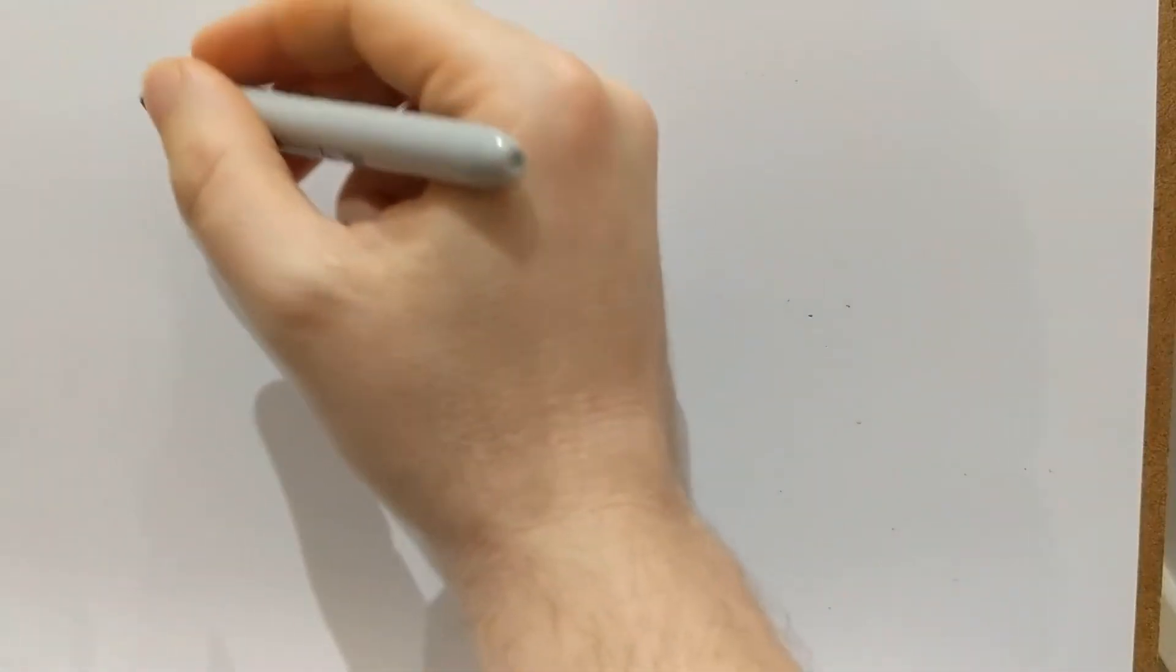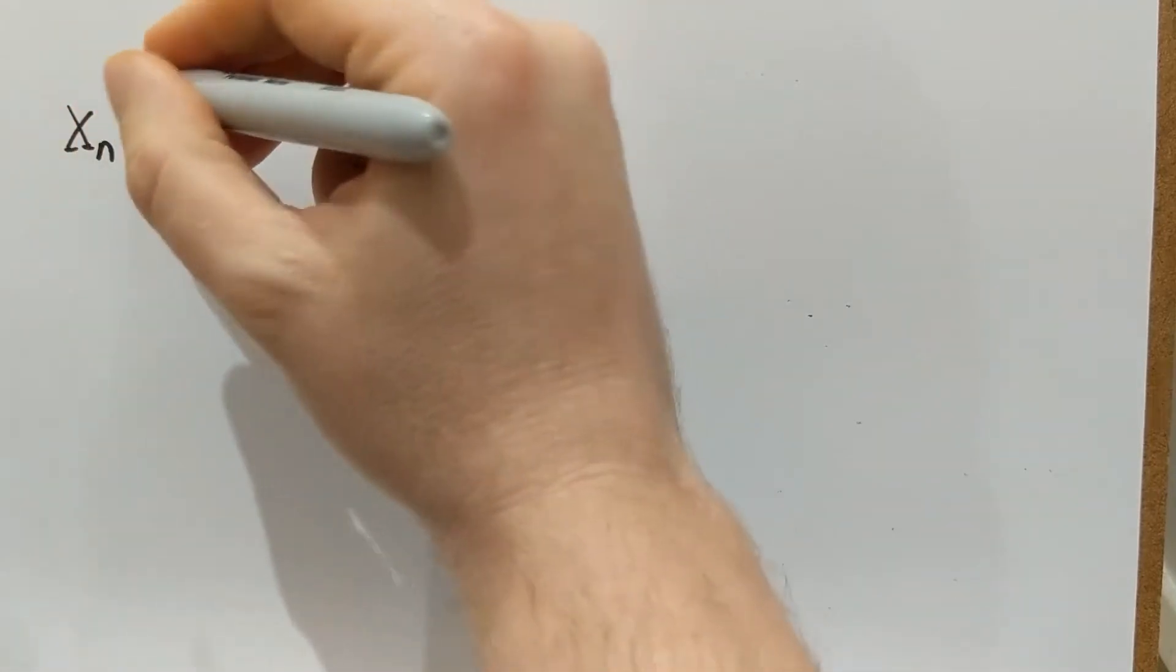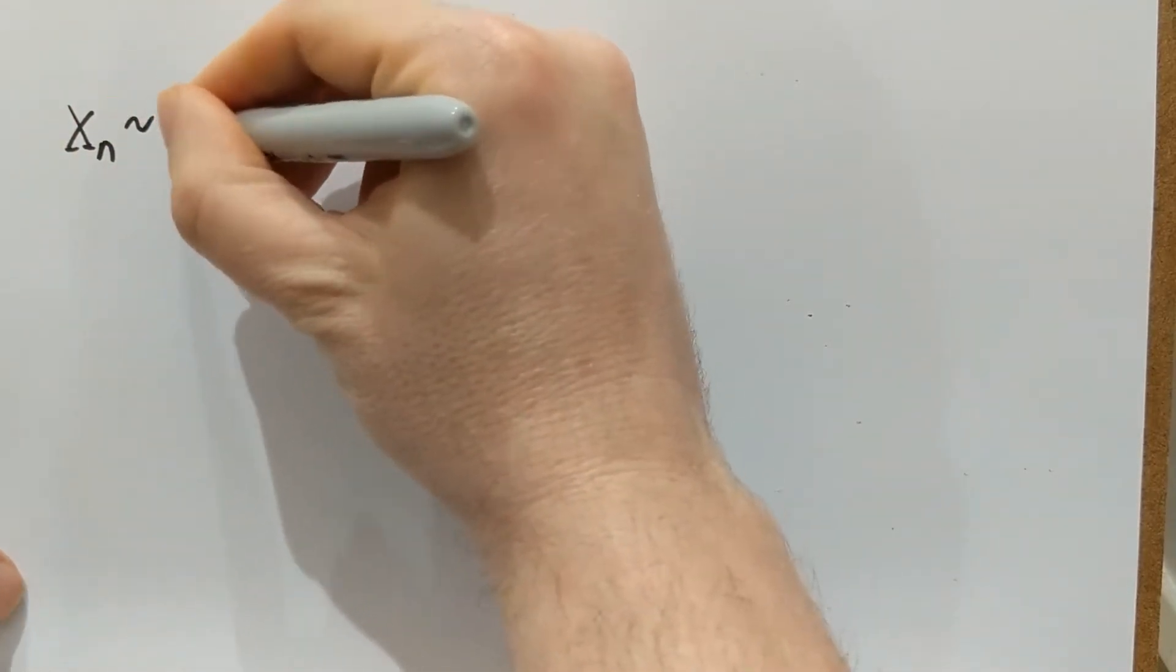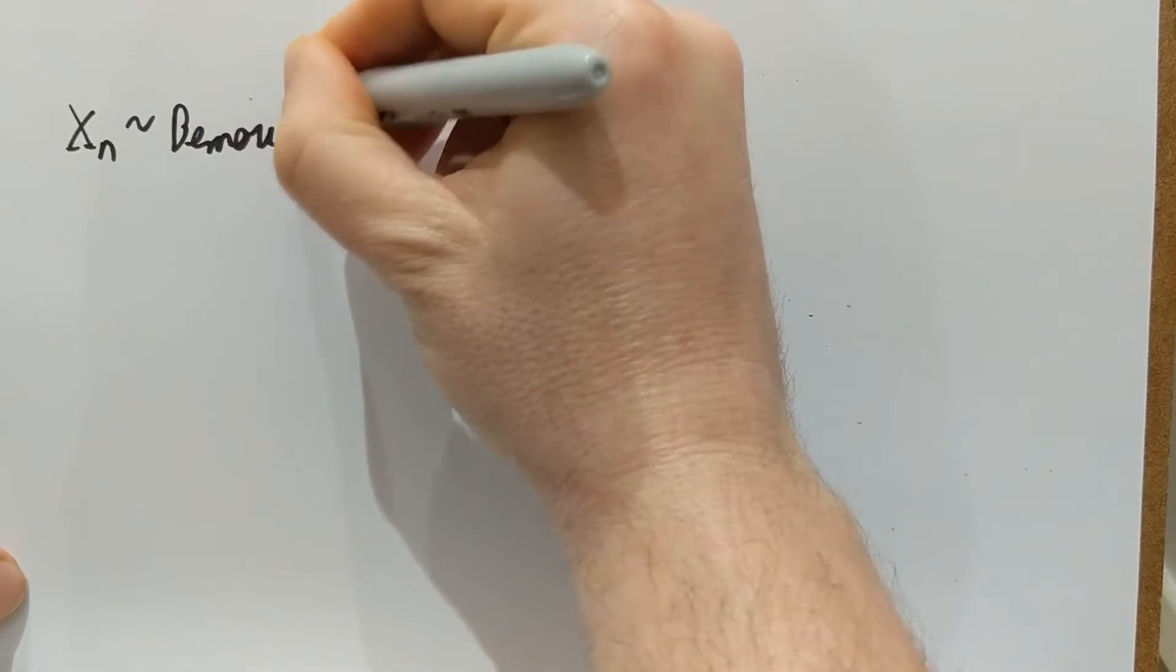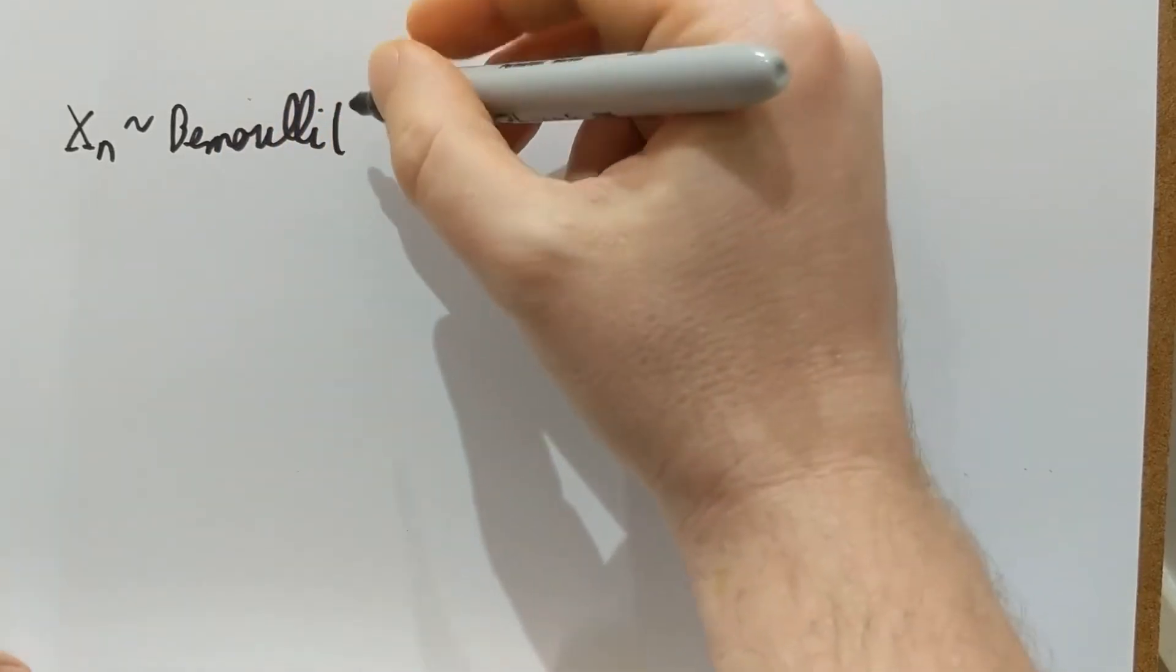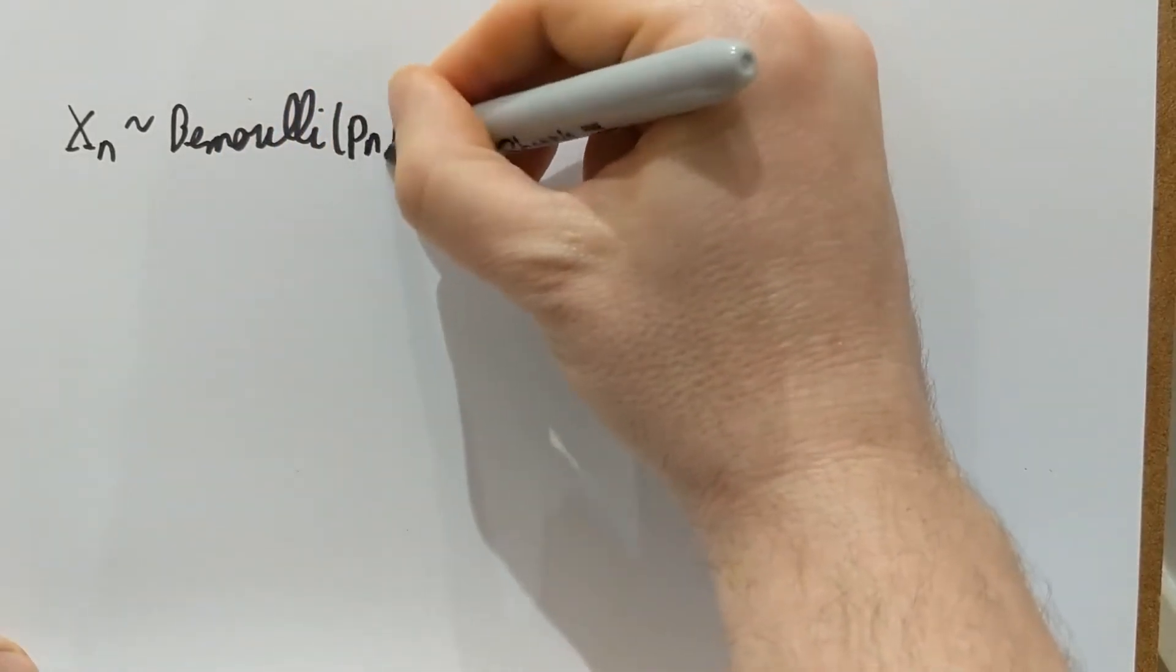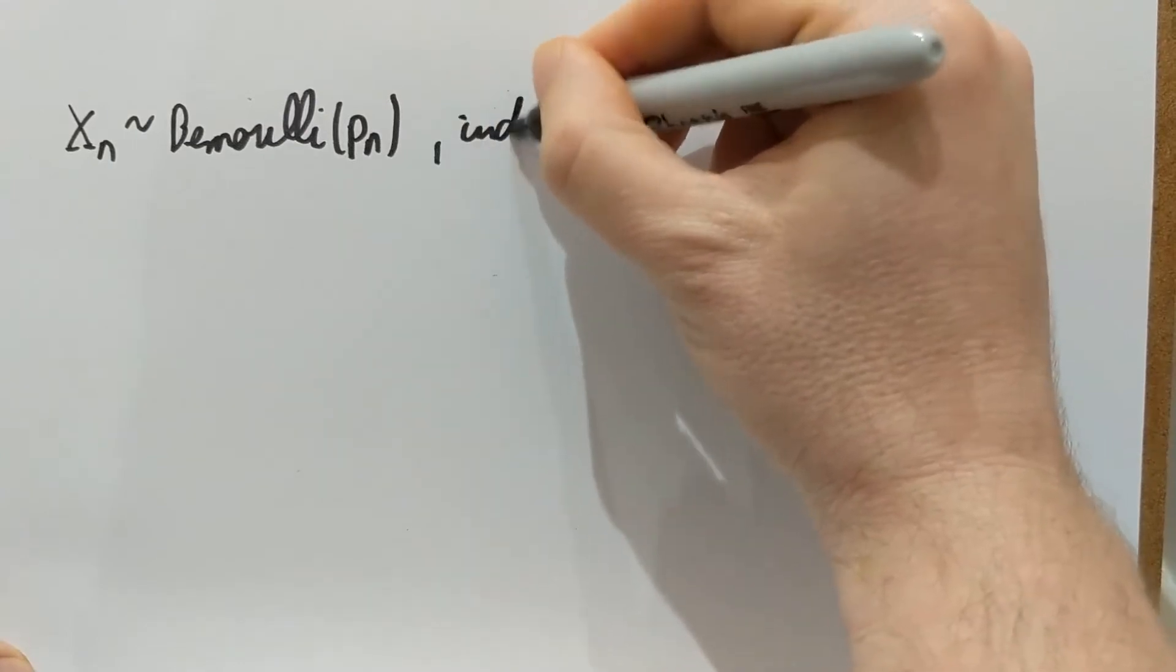I'm going to take independent random variables this time. Xn are Bernoulli and independent. The trick of course is that the parameter of the Bernoulli depends on n.